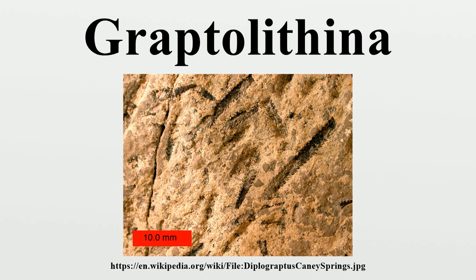Taxonomy. The name graptolite originates from the genus Graptolithus, which was used by Linnaeus in 1735 for inorganic mineralizations and crustaceans which resembled actual fossils. In 1768, in the twelfth volume of Systema Naturae, he included G. Sagittarius and G. Scalaris, respectively a possible plant fossil and a possible graptolite. In his 1751 work, he included a figure of a fossil graptolite of a strange kind, currently thought to be a type of Climacograptus. Later workers used the name to refer to a specific group of organisms. Graptolithus was officially abandoned in 1954 by the ICZN, partly because of its original purpose as a grouping for inorganic mimicries of fossils.